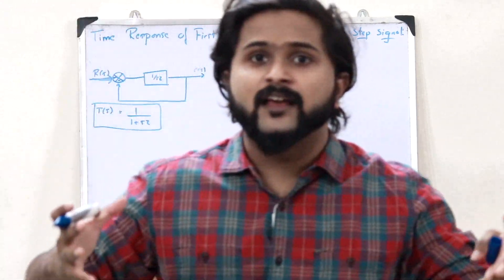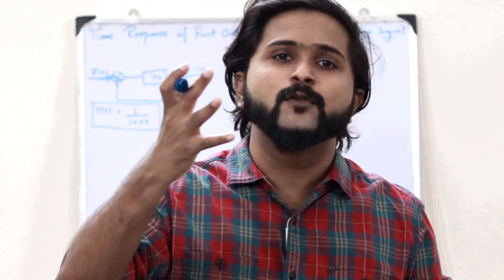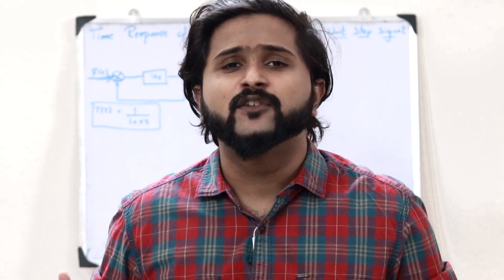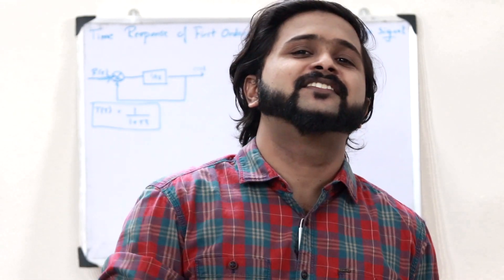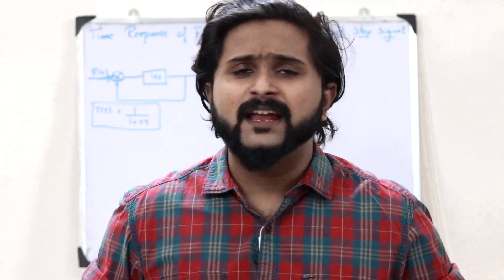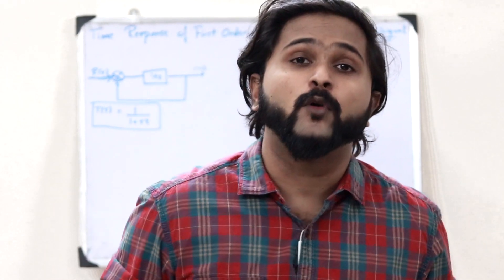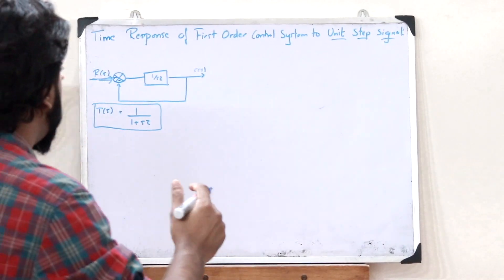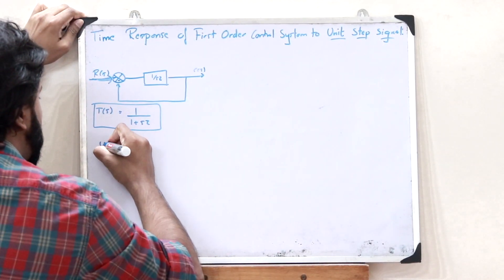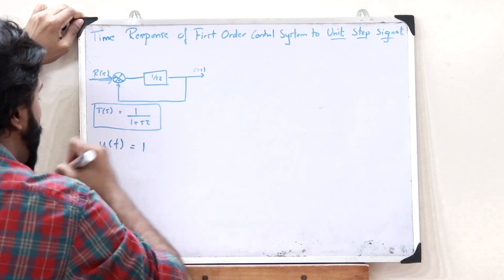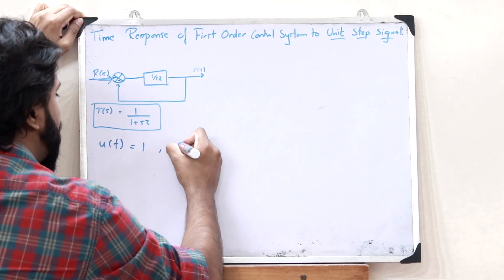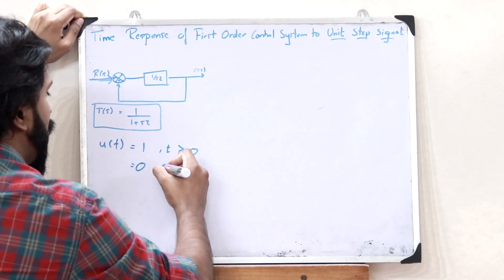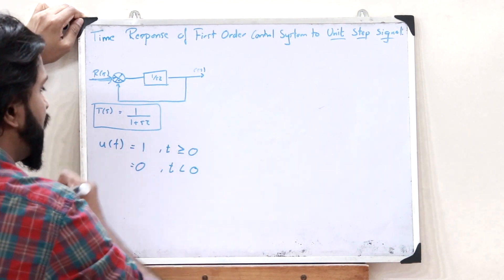We know that a unit step signal is defined as u(t) = 1 for t ≥ 0, and u(t) = 0 for t < 0. I've explained the various standard test signals in a separate video — I'll leave the link in the description below.